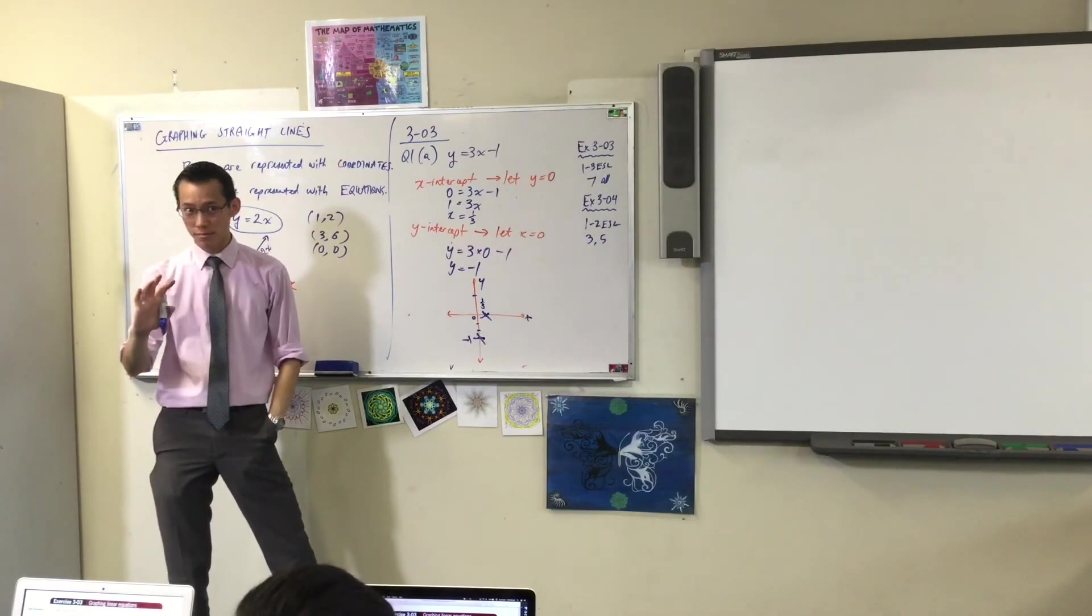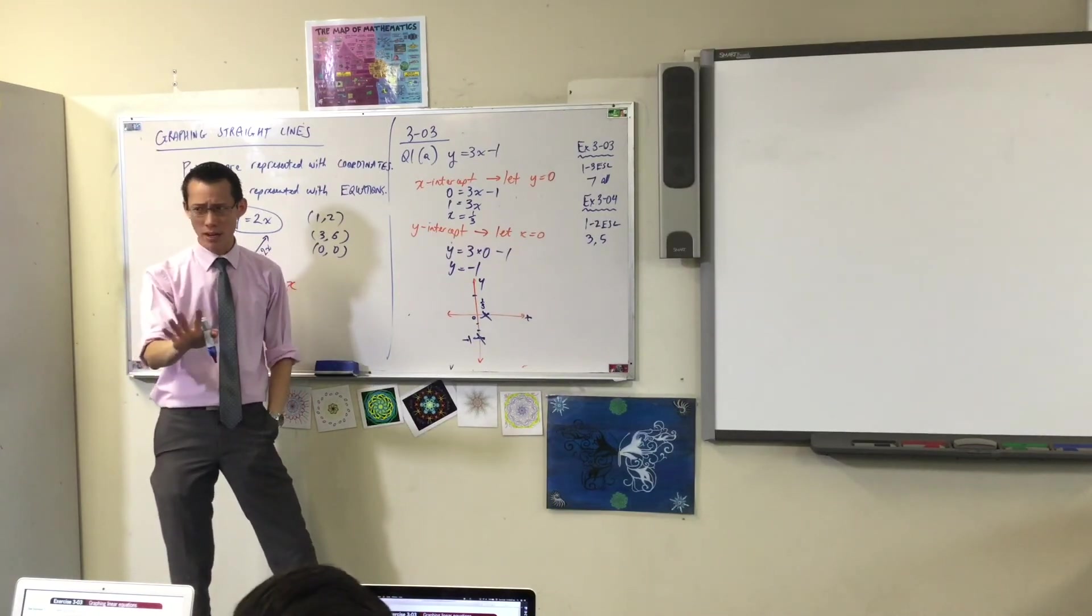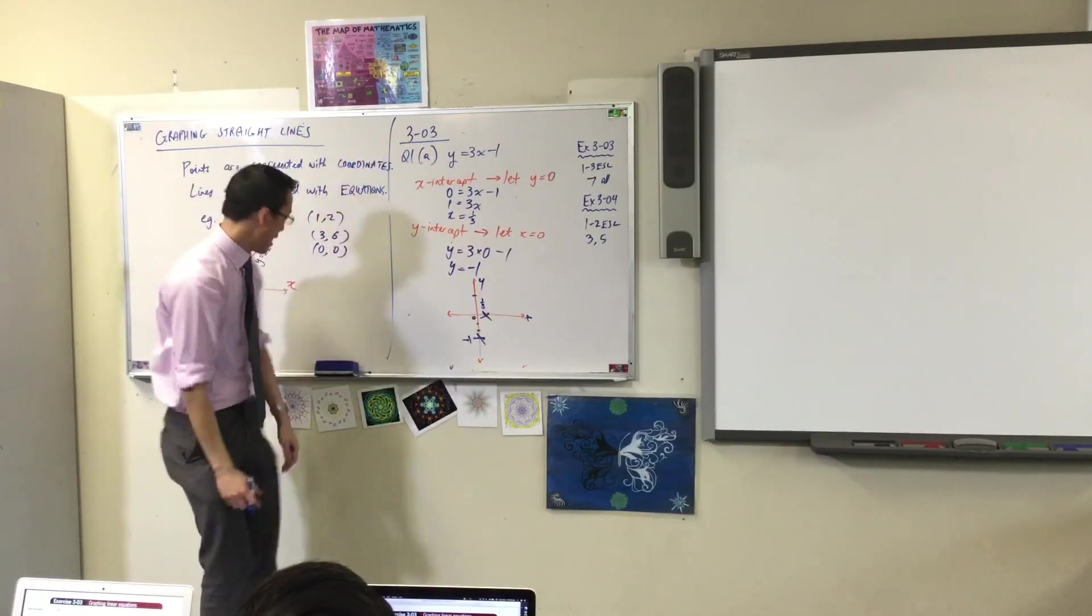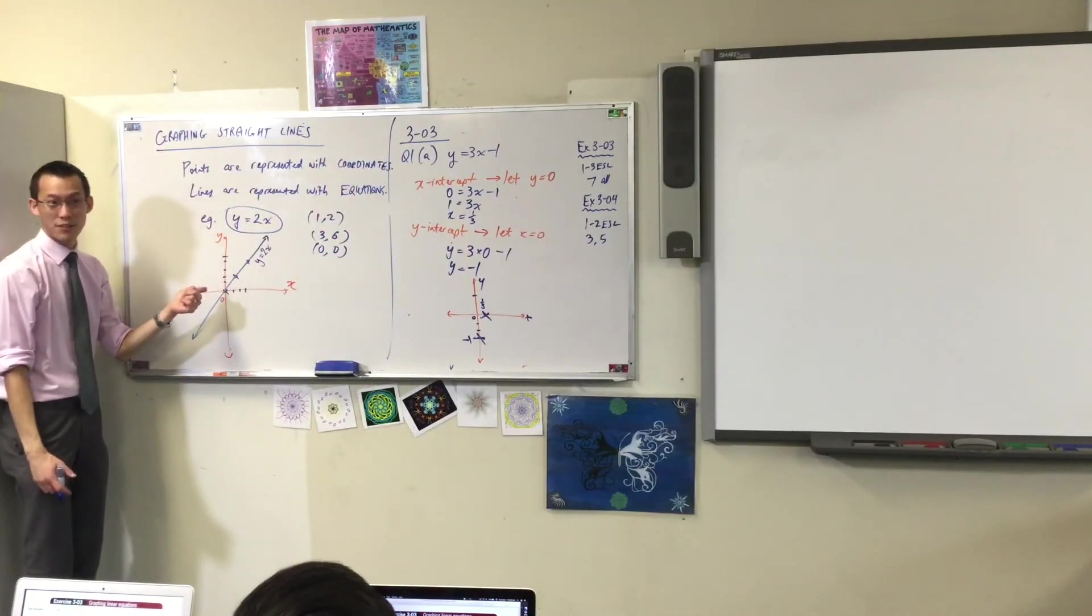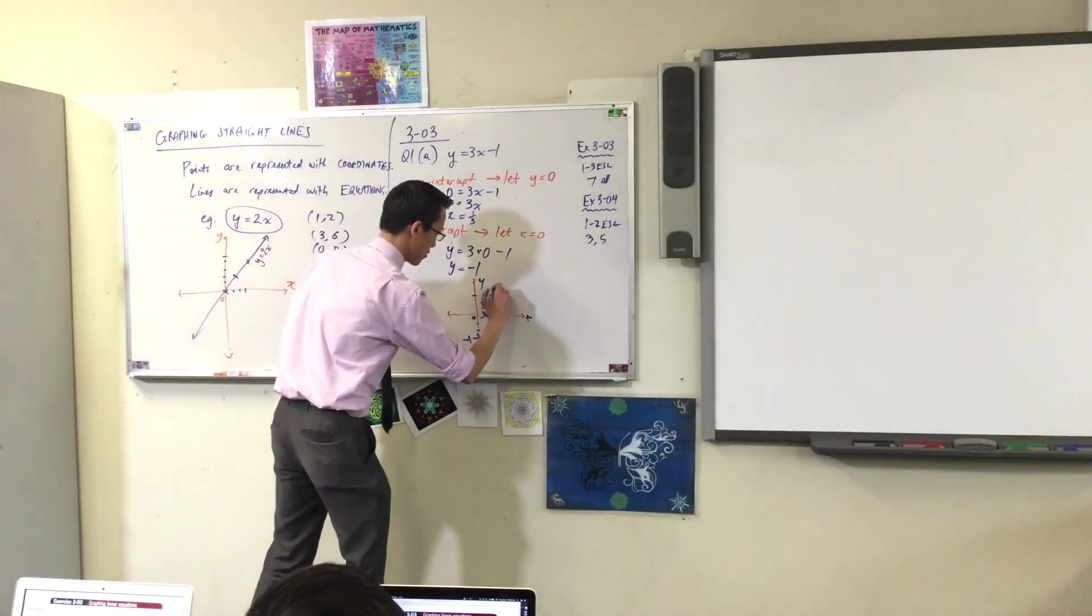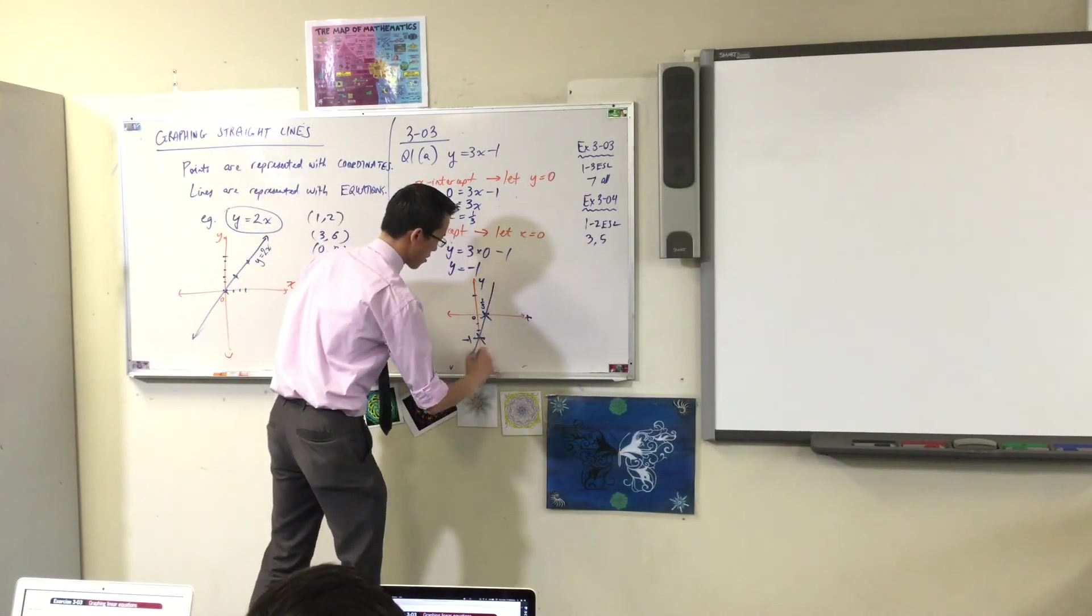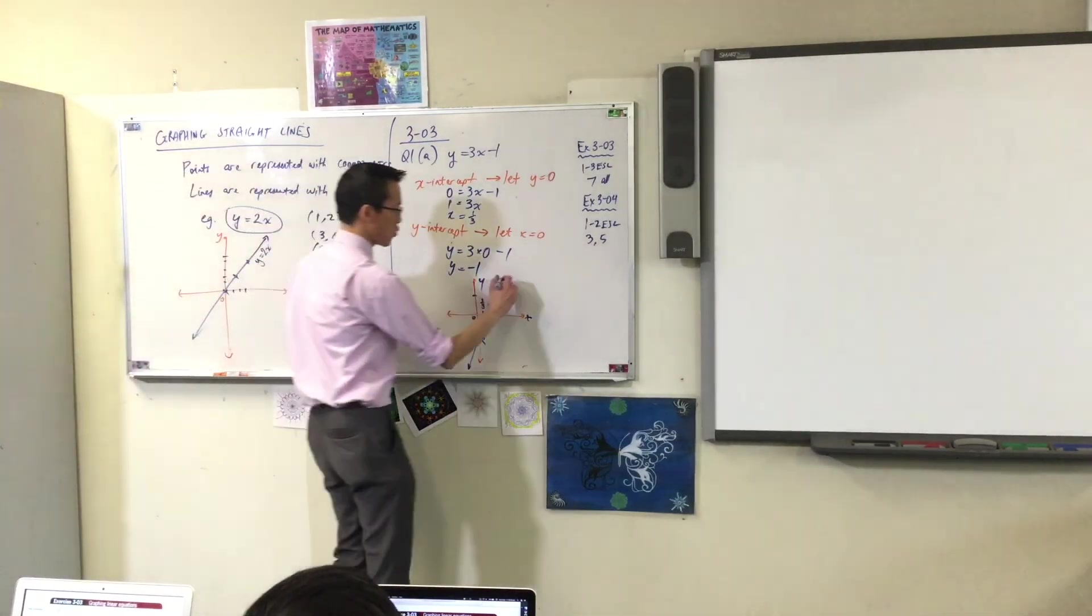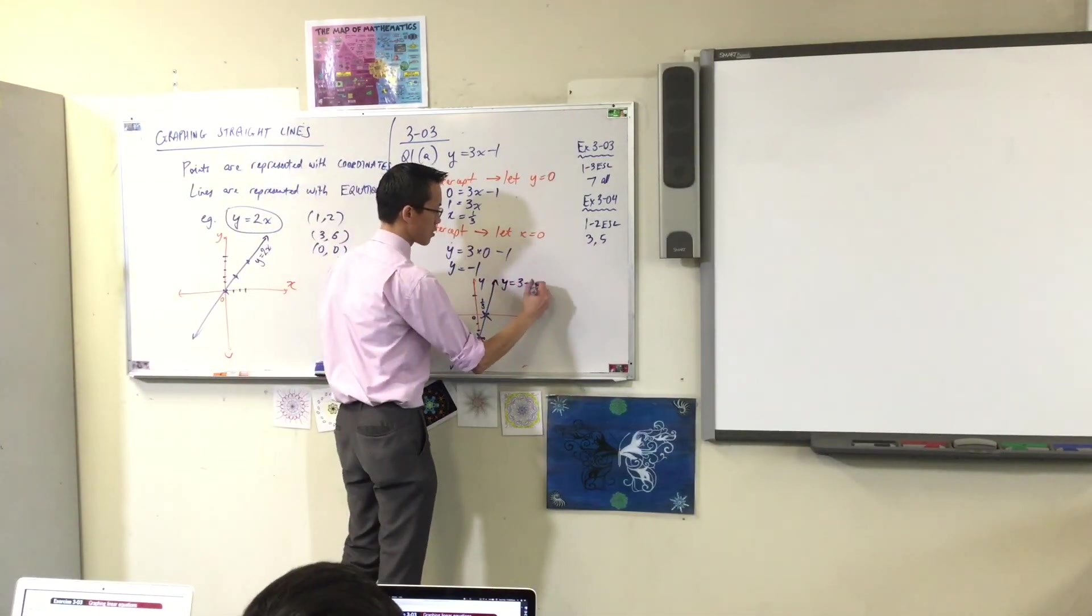Okay. Anyone have any questions? Is that alright? Yeah? So you see how I've taken this information, I've put it onto the diagram. And just like before, now I just have to join the dots. There you go. y equals 3x minus 1.